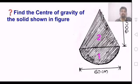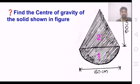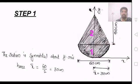We have to find the center of gravity of the solid shaded figure. The height is 90 cm and the diameter is 60 cm. The section is symmetric about the y-axis, hence x-bar is equal to 60 by 2, which equals 30 cm.